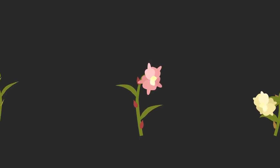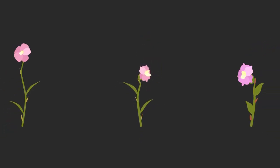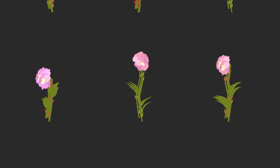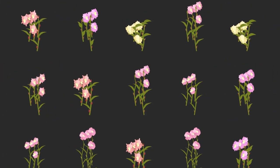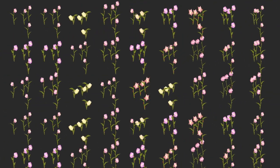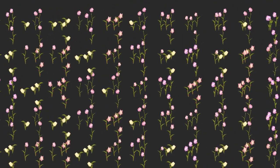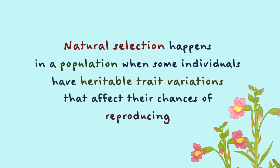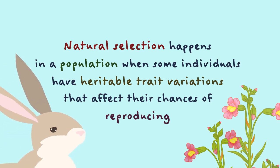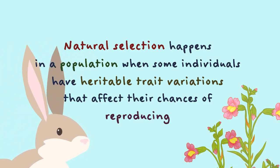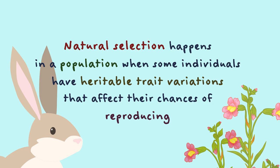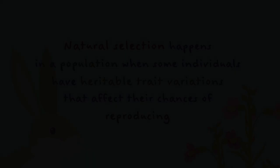It's all about which individuals pass their genes to the next generation. Most importantly, natural selection has no goal or purpose. It acts on variation that comes about randomly all the time through mutation and allele shuffling, and it can only work with trait variations that already exist in a population. Natural selection happens when some individuals have heritable trait variations that affect their chances of reproducing — anything else is not natural selection.